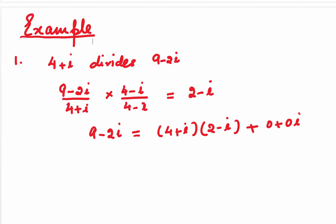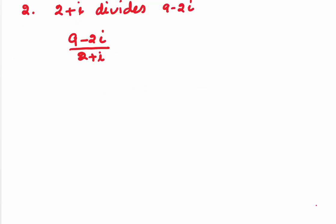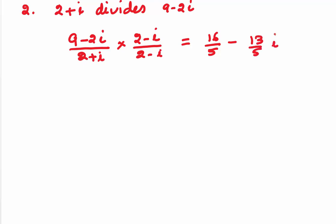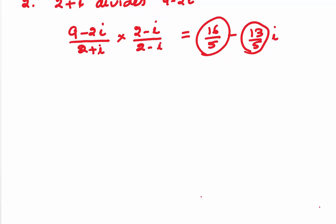Now let's look at an example where our delta is not 0. We divide 9 minus 2i by 2 plus i. Let us rationalize this by multiplying and dividing by 2 minus i. On simplifying, we get 16/5 minus (13/5)i. Since 16/5 is not an integer and 13/5 is not an integer, we round them off to the nearest integer: 16/5 rounds to 3 and 13/5 rounds to 2. That gives us gamma equal to 3 minus 2i.